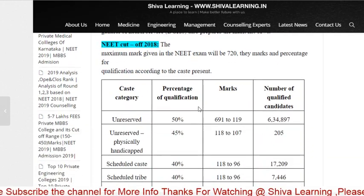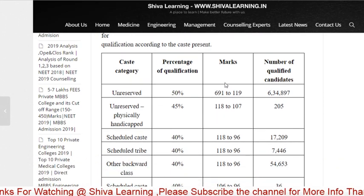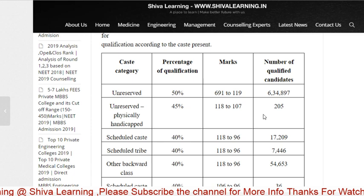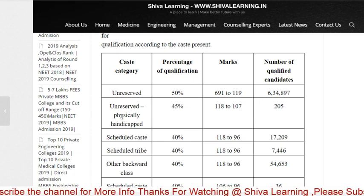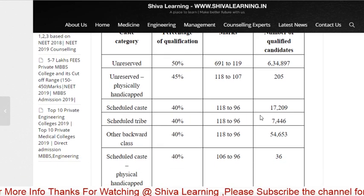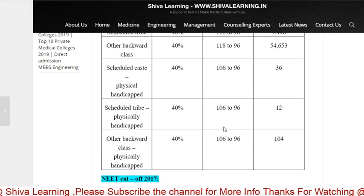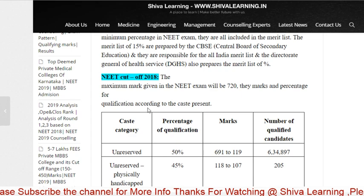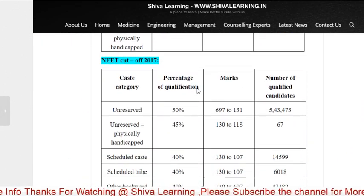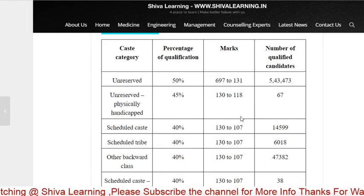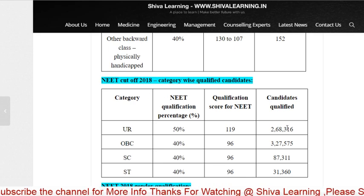There is also data on the unreserved category percentage of qualification for NEET 2018 — how many students qualified in which marks range, what the physically handicapped category cutoff was, how many were in SC, how many in ST, how many in OBC. This is the exact 2018 data. You can also see the 2017 data separately for comparison.